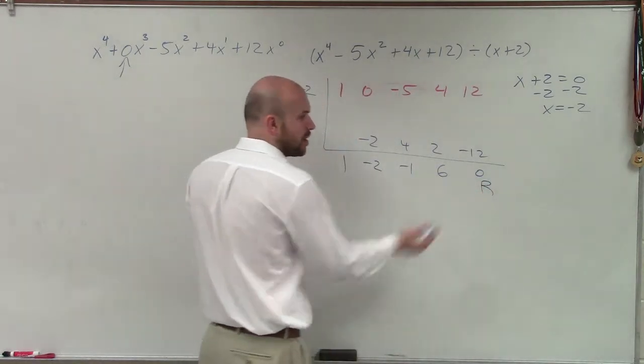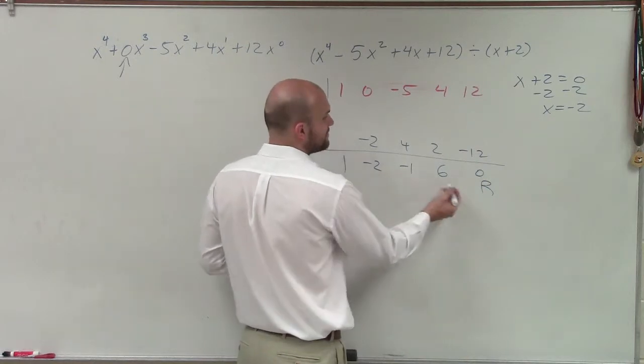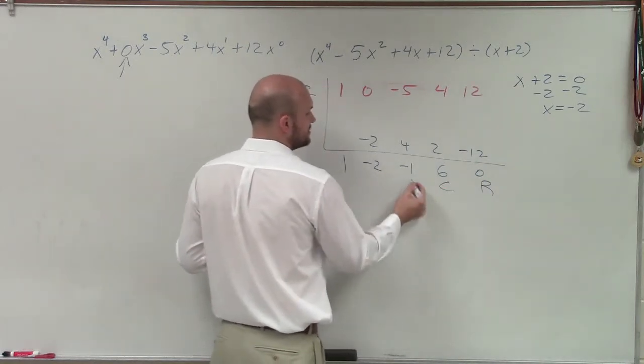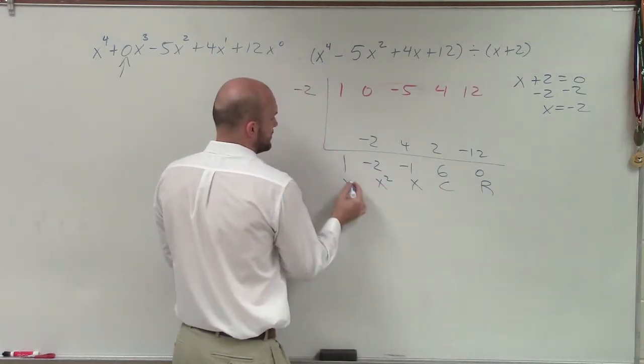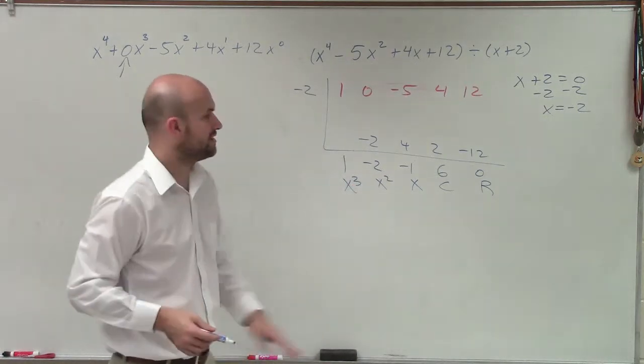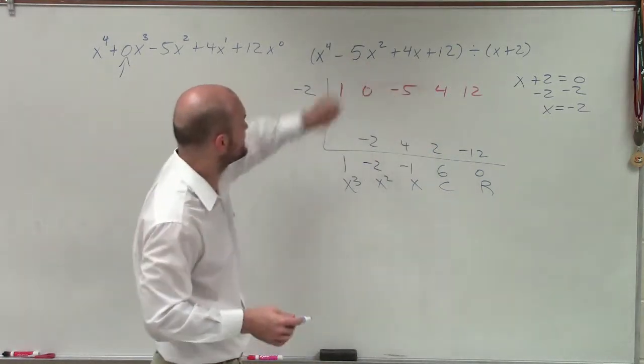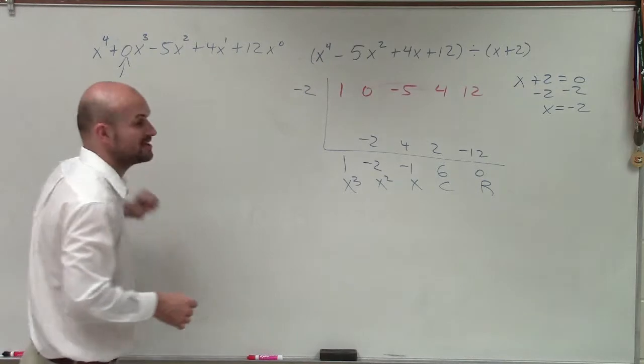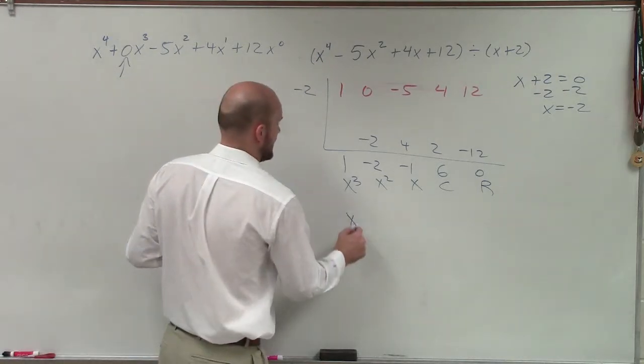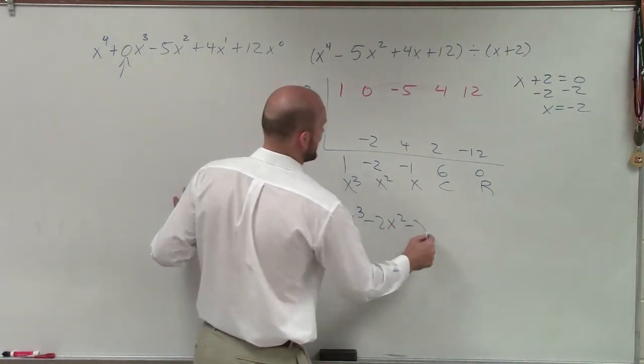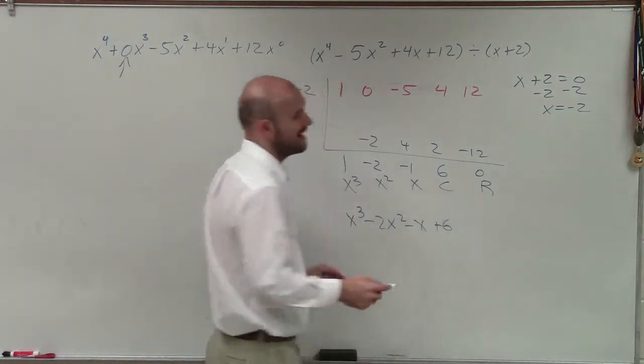we start with 0, which is our remainder. Our final term is always going to be a remainder. So our remainder, constant, linear, quadratic, and cubic. So therefore, x plus 2 divides into x to the 4th minus 5x squared plus 4x plus 12, x cubed minus 2x squared minus x plus 6 times.